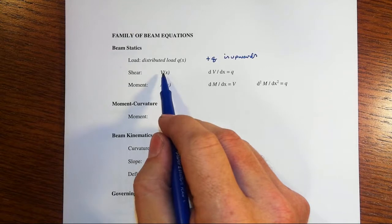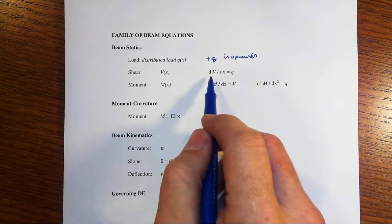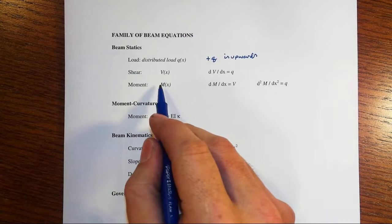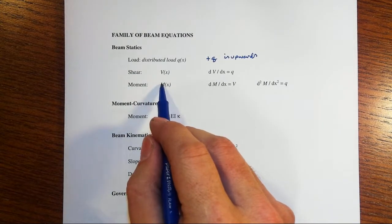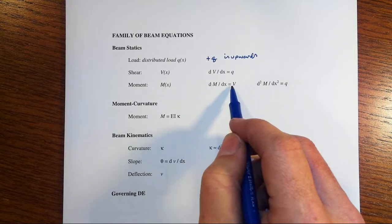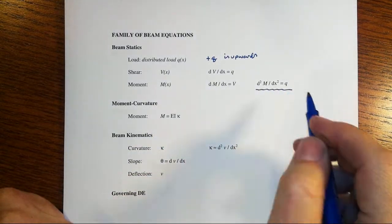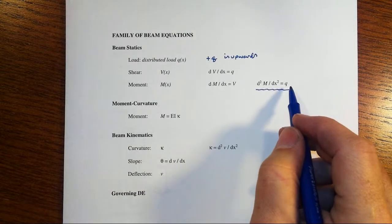So capital V, we're now going to become very case sensitive here. Shear as a function of X is capital V. Moment as a function of X is capital M. First derivative or the slope of the moment diagram is equal to the shear. That means the second derivative of the moment is equal to the distributed load intensity.